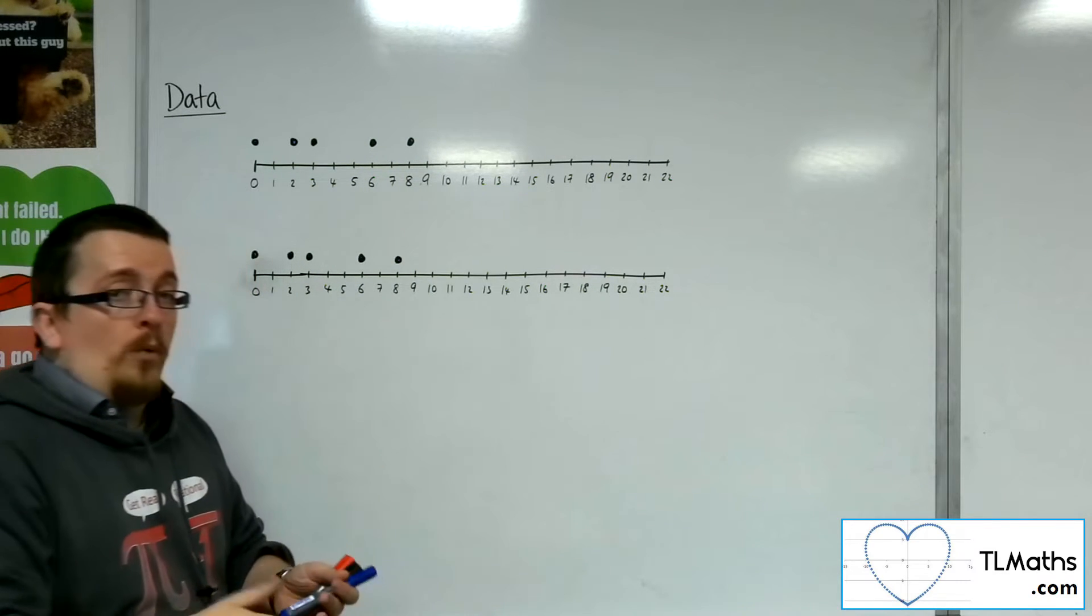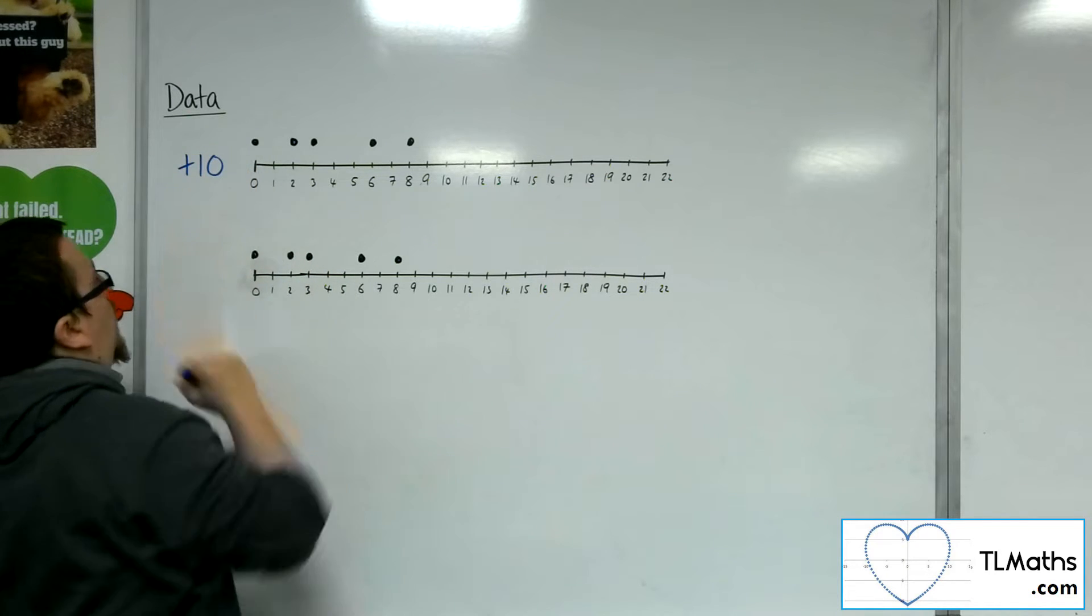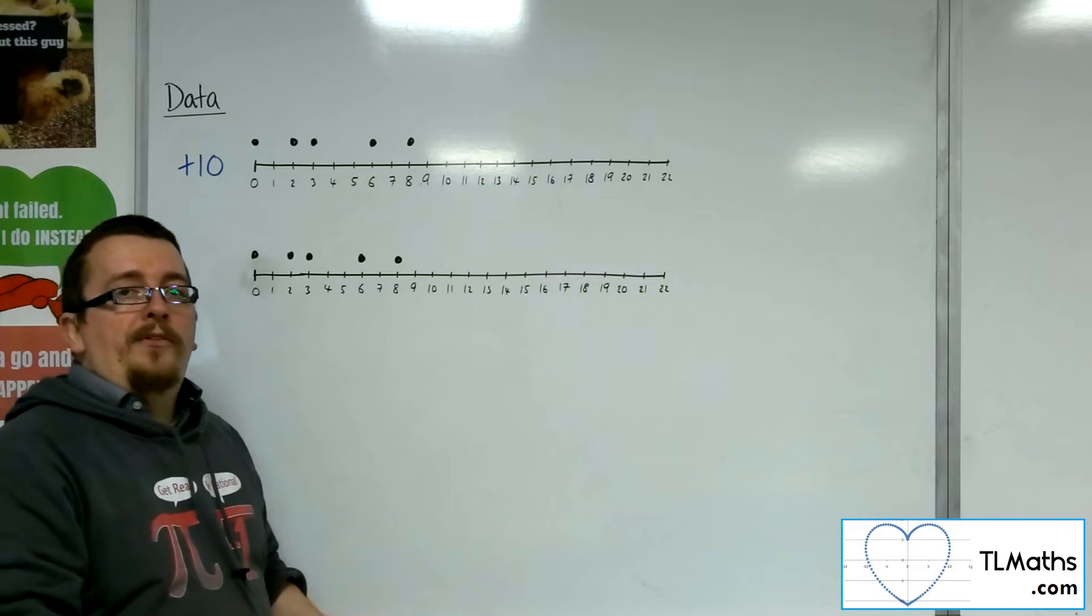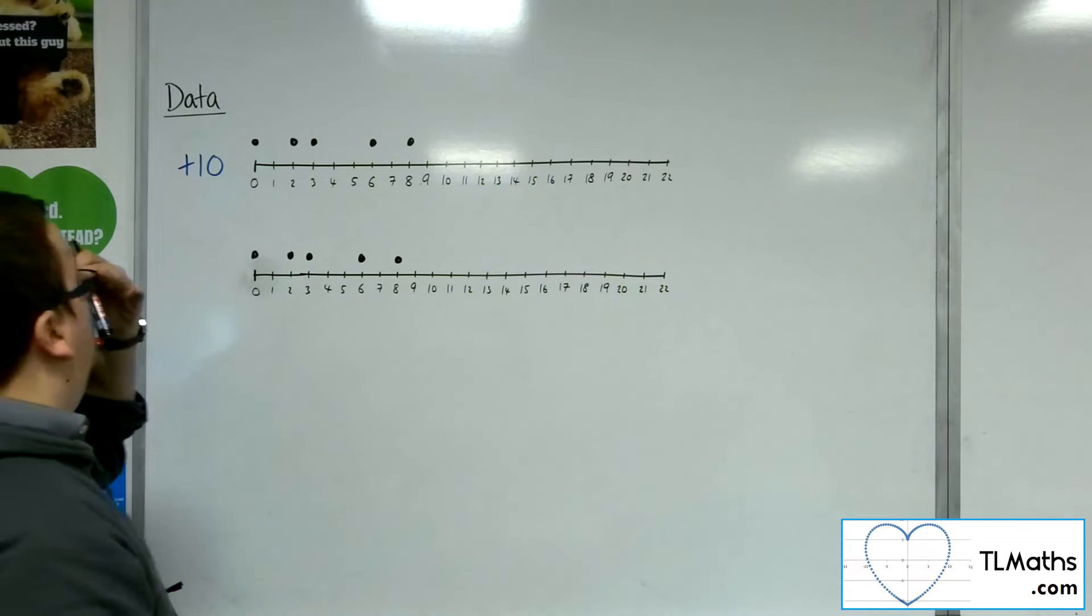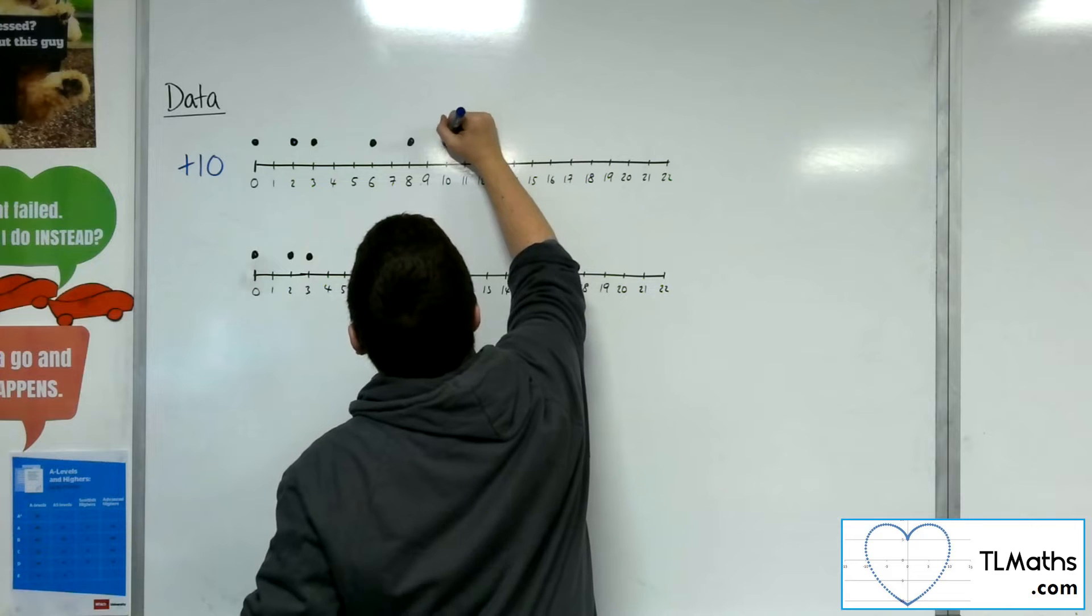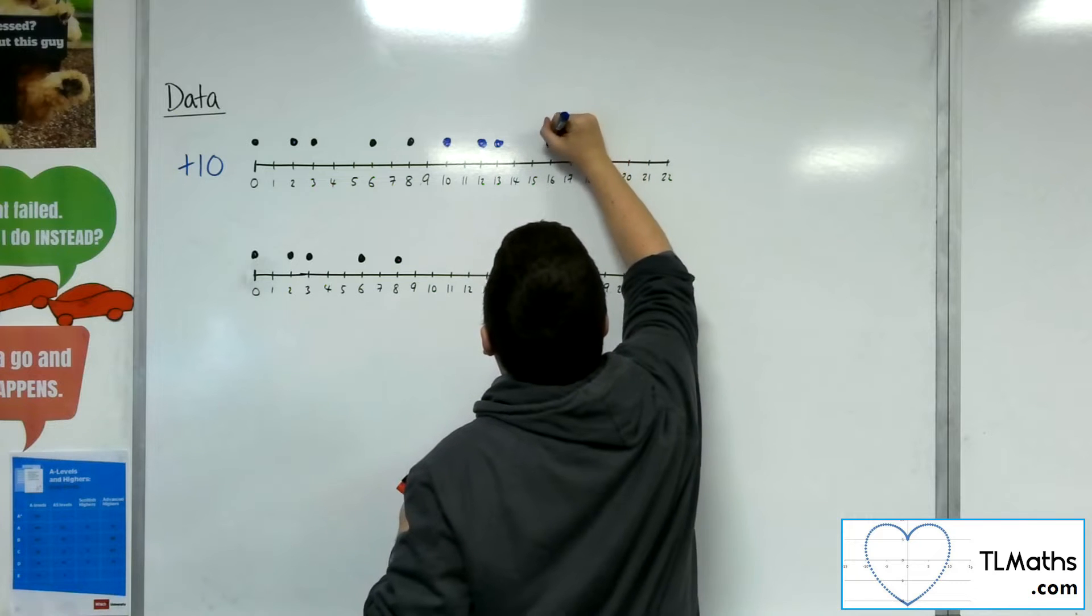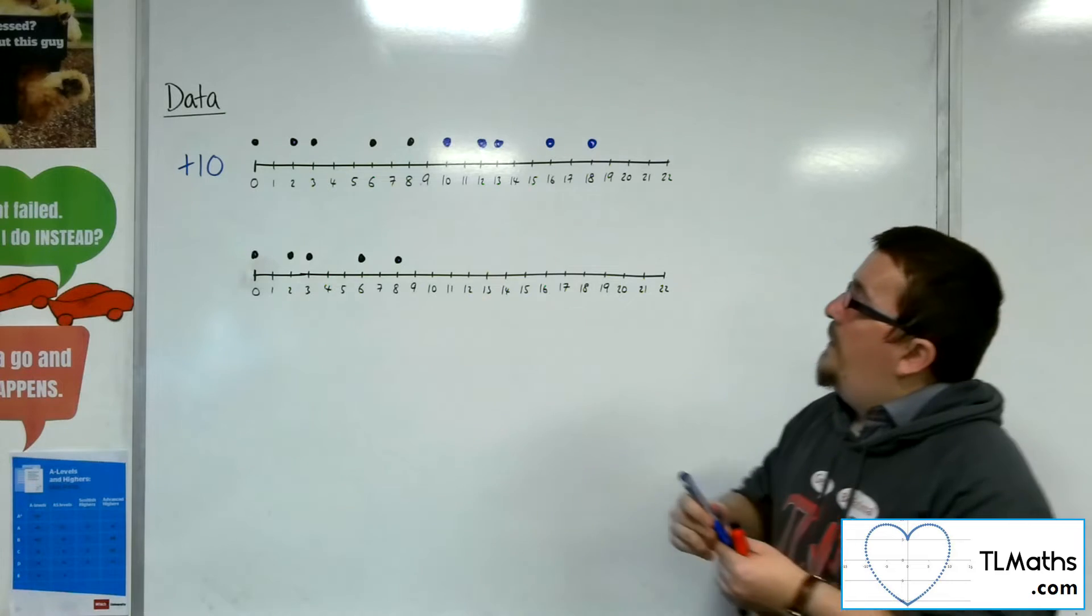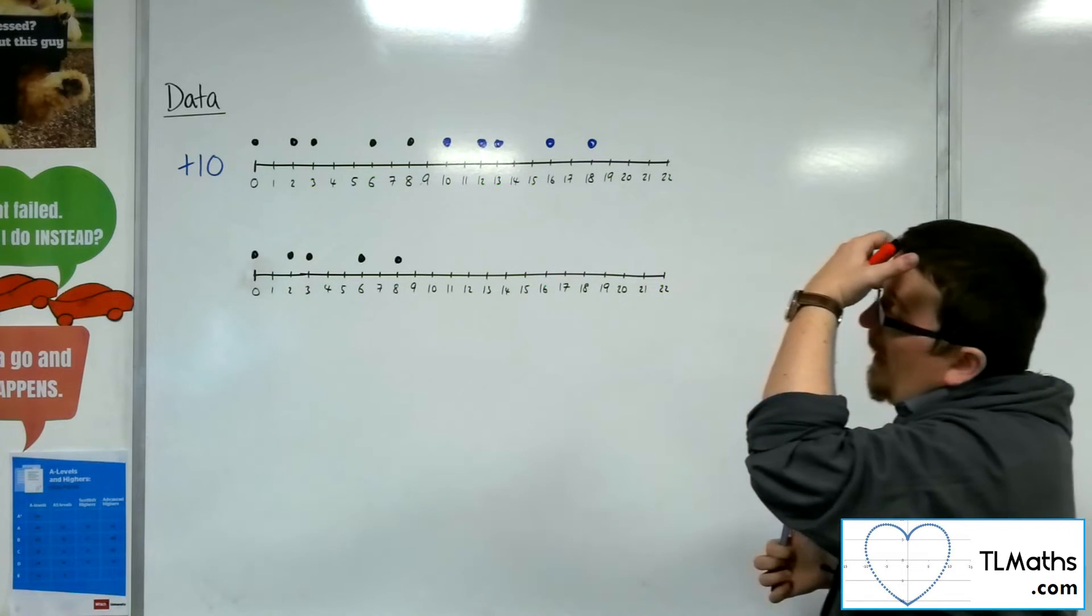In the first example, what I want to do is I'm going to add 10 to all of the bits of data. So let's see what happens if I just add 10 to all of the bits of data. What is going to happen? So 0 will become 10, 2 will become 12, 3 will become 13, 6 will become 16, and 8 will become 18. So this is where my new data set is after adding 10.